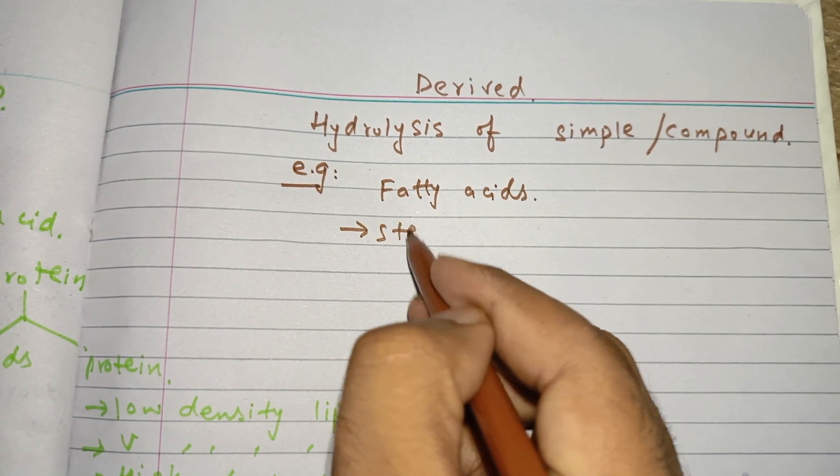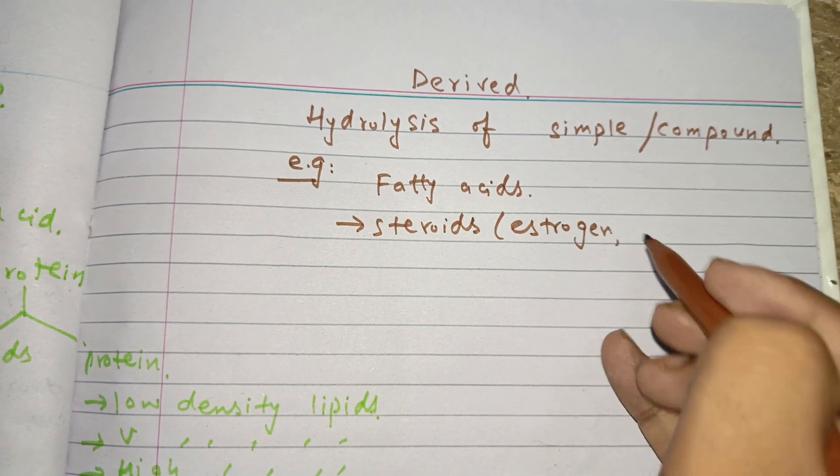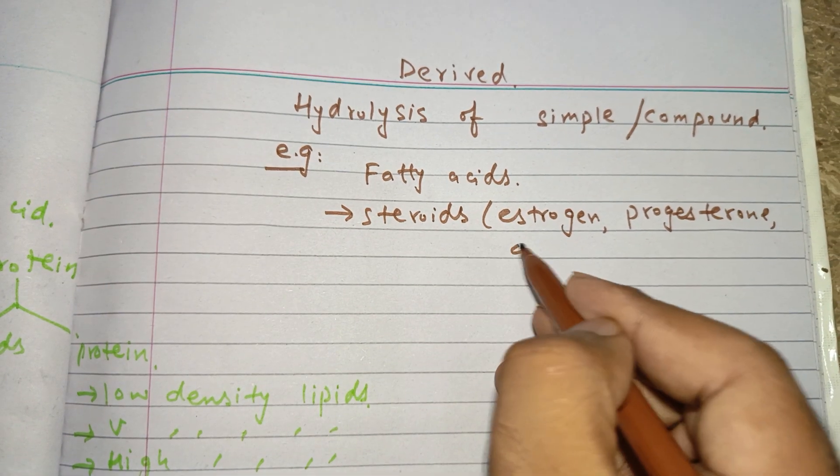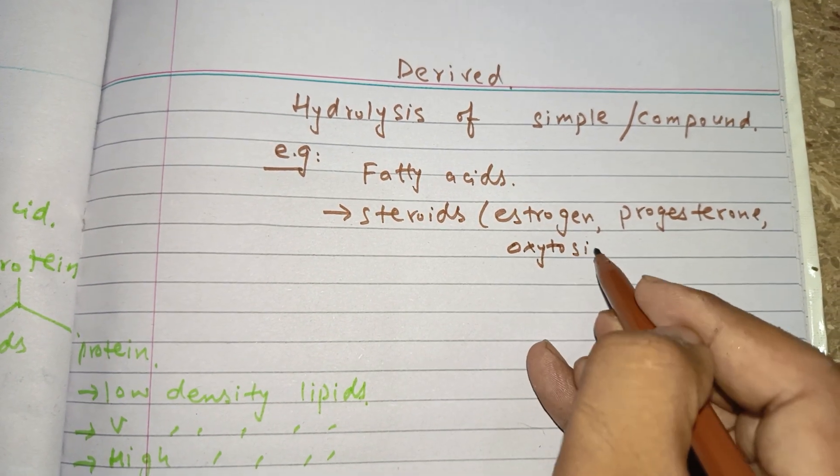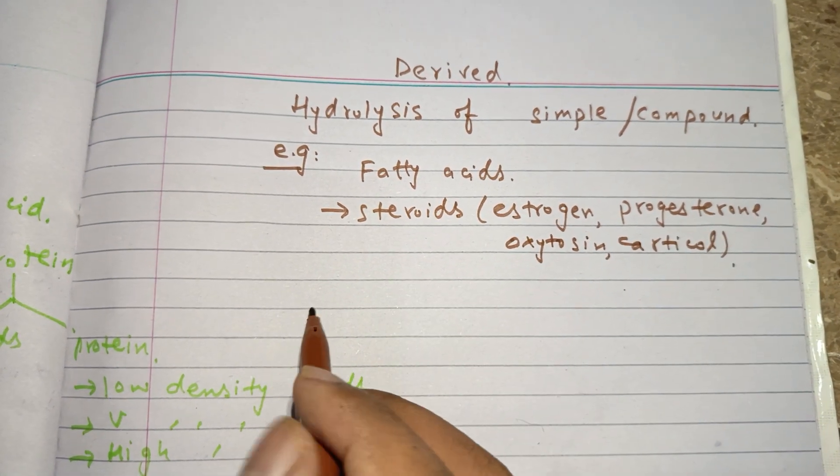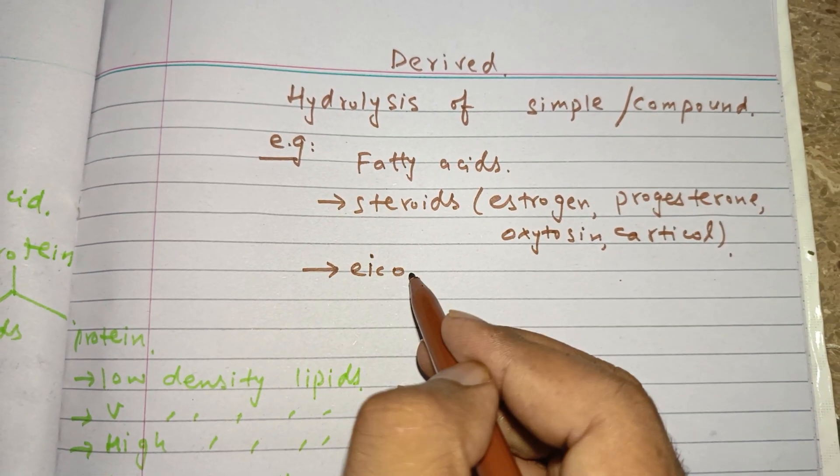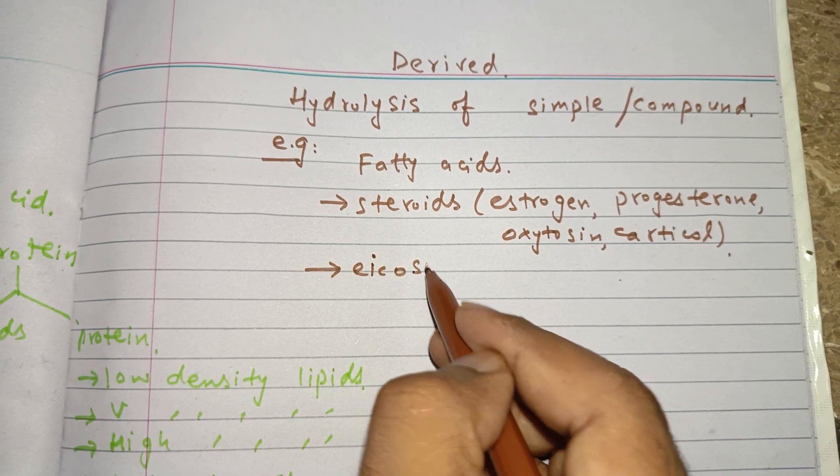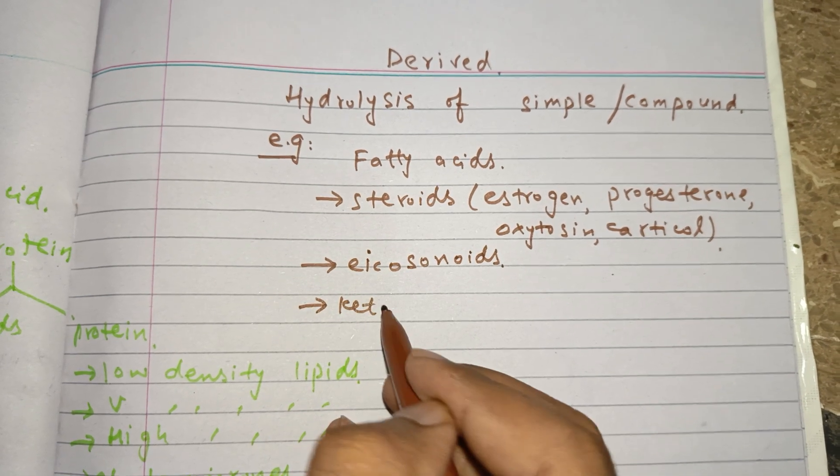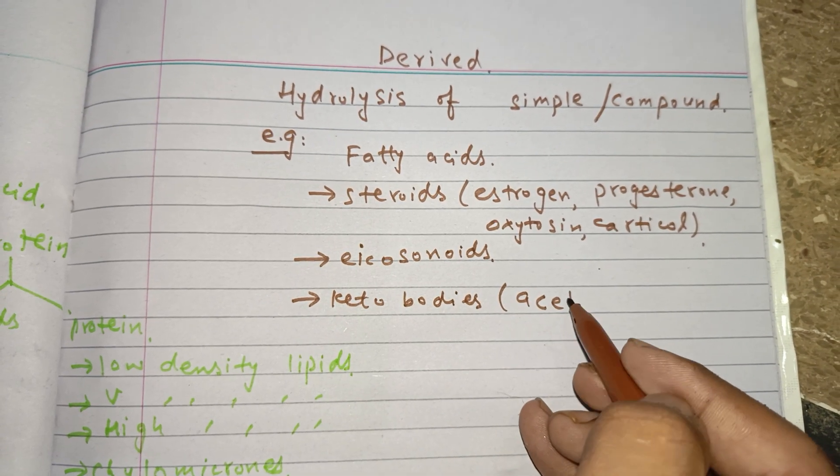Examples of derived lipids include steroids such as estrogen hormone, progesterone hormone, oxytocin, and cortisol. Eicosanoids are also examples of derived lipids which we will discuss later in this series, as well as ketone bodies which are obtained from acetyl coenzyme A.